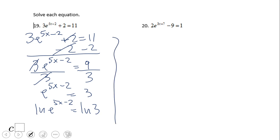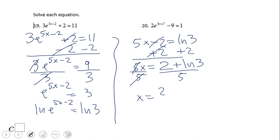And that will give us 5x minus 2 equals natural log of 3. Add 2 on both sides. 5x equals, I will suggest you to start with 2 here, 2 plus natural log of 3 and then divide by 5. So the solution is 2 plus natural log of 3 over 5.